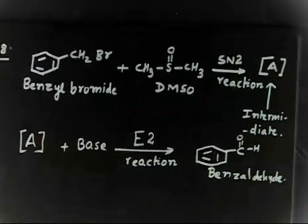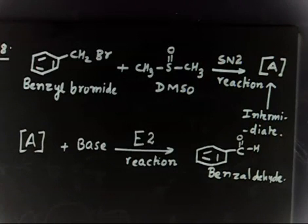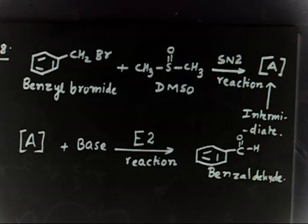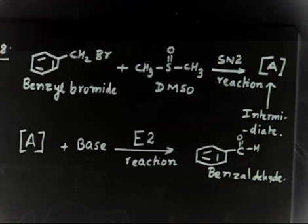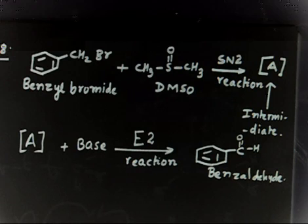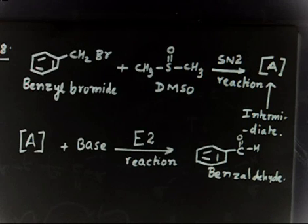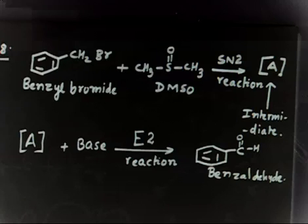So finally you are getting benzaldehyde. You have to write the mechanism for this reaction. In the first step, benzyl bromide reacts with DMSO via SN2 mechanism and gives an intermediate A. This intermediate is not stable. If the medium is slightly basic and temperature is slightly elevated, this intermediate undergoes E2 elimination and gives benzaldehyde as the product.